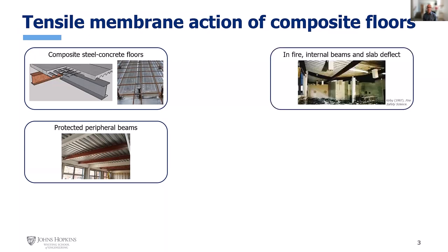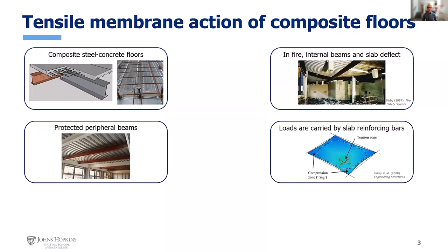When we want to leverage tensile membrane action in a performance-based fire design, we can leave central beams unprotected. The peripheral beams that surround the panel and bridge between the columns are protected, but central beams are left without protection. In a fire, those central beams get very hot very fast, so they deflect. The steel deck is unprotected and there are large displacements of the slab. With these large deflections, the reinforcement bars in the slab get put in tension and start resisting additional loads, transferring loads into a new load-carrying mechanism with the steel bars in tension in the central zone and a compression ring developing in the slab.